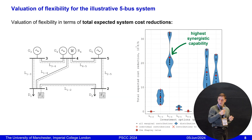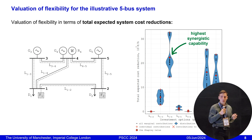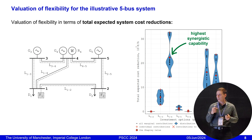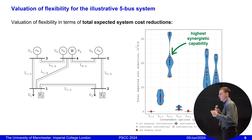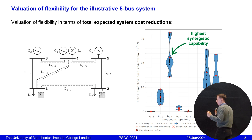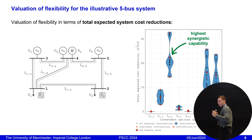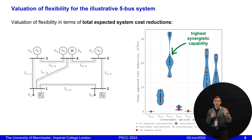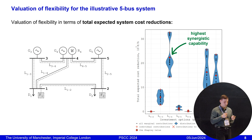We then repeated the simulations for another objective function — cost reduction, minimizing the total cost of the system. We got similar results for this case, shown in blue color. Again, line 1-4 is better than investments in flexibility in this case.